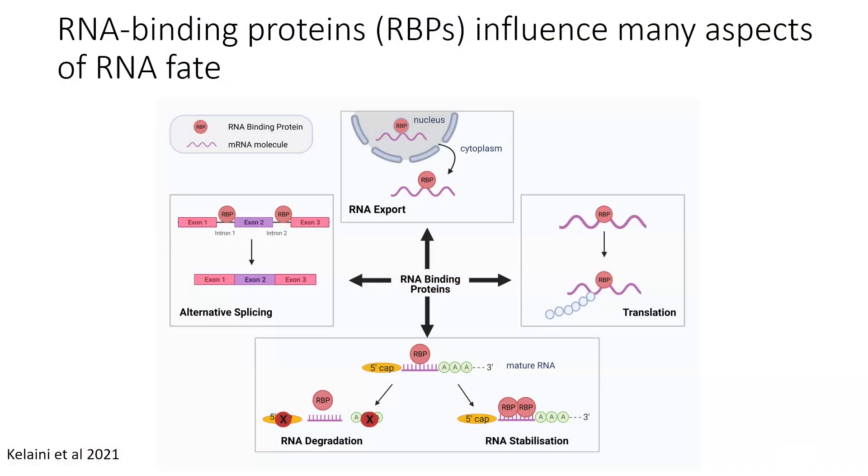In the human genome, there are 2,000 to 5,000 protein coding genes annotated or predicted to bind RNA. These RNA binding proteins can influence many aspects of RNA processing, from splicing to export, translation, stability, and degradation.